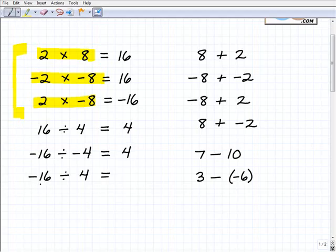And now here I have a negative 16 divided by a positive 4, opposite signs, so the answer is going to be negative, negative 4. All right, so this is the easy stuff.